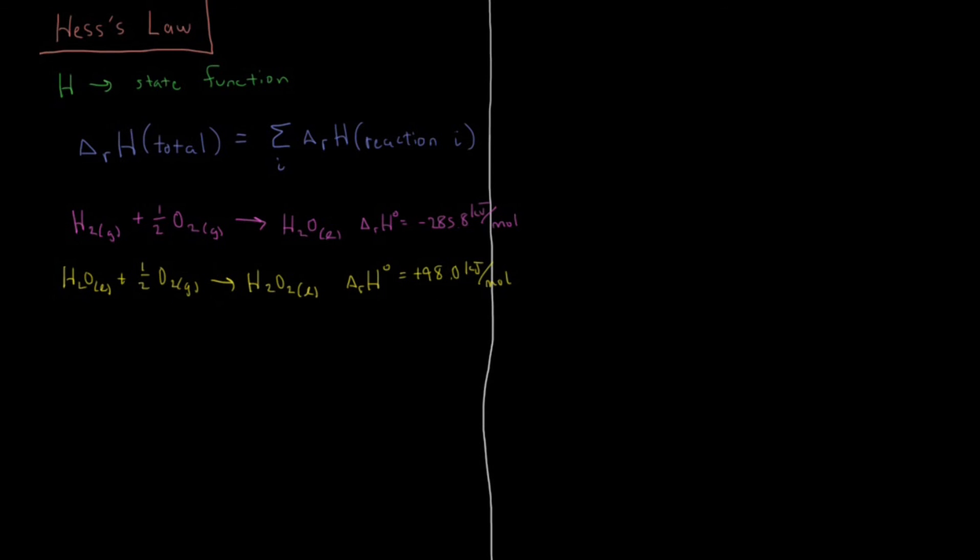We can see that these reactions, if we sum up the two of them here, we get one half plus one half because this one, this minus this, cancel out because you have a reactant here and a product there. So what we're left with in the net is going to be H2 gas plus O2 gas, one half plus one half giving us just one, going to hydrogen peroxide as a liquid.